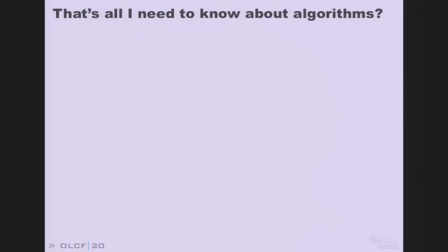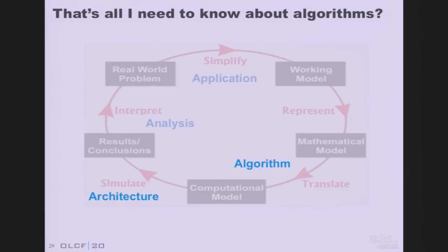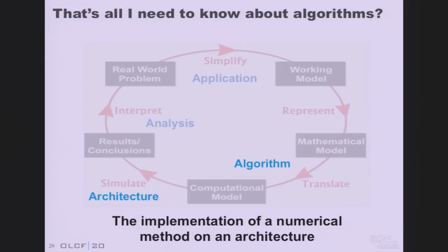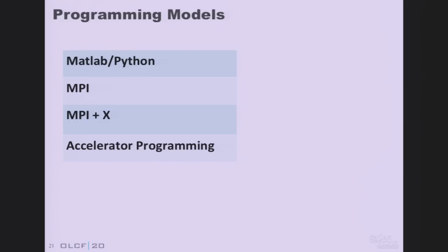That's not all I need to know about algorithms — we're going to tie more closely to what Rob talked about earlier, where algorithms meet architecture. We've talked about computational kernels, but not how we take a numerical method and implement it in the context of high performance computing. Programming models are the way in which we take an algorithm and implement it on our architecture. The top level might be where many of us start: MATLAB or Python — some interpreted serial language. Rob talked this morning about programming models, and I want to add and touch on this as well.